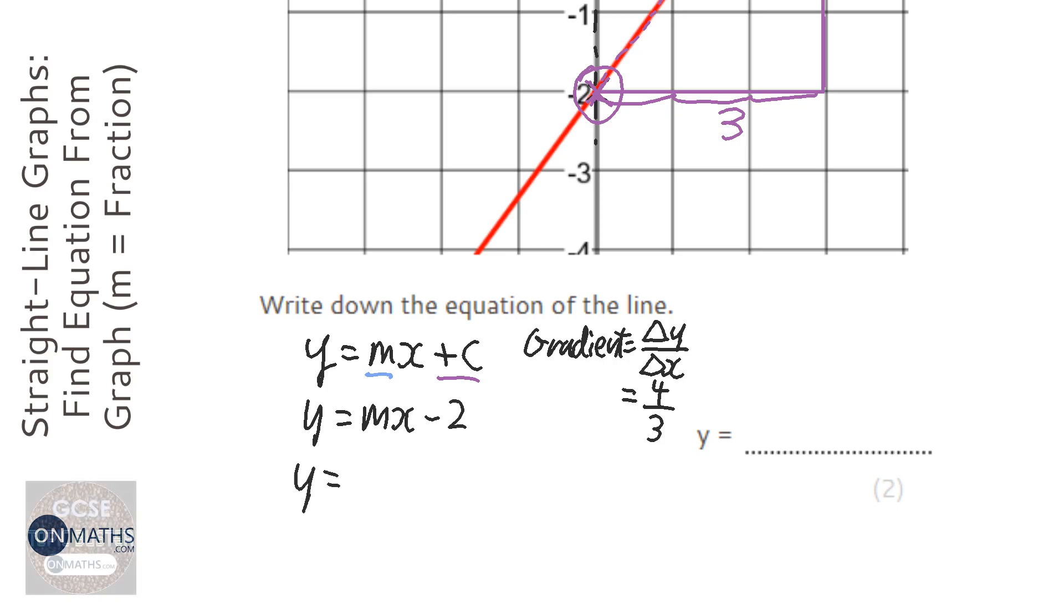So we can then put that in, y equals 4 over 3, x minus 2. Now you could write that as 1 and a third as well. So 4 thirds x minus 2.